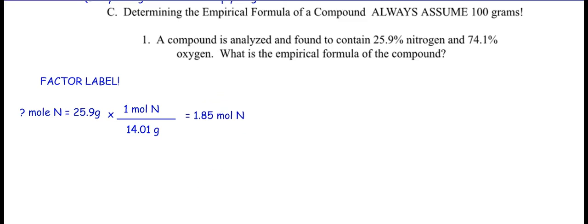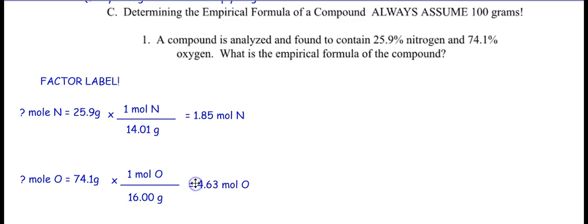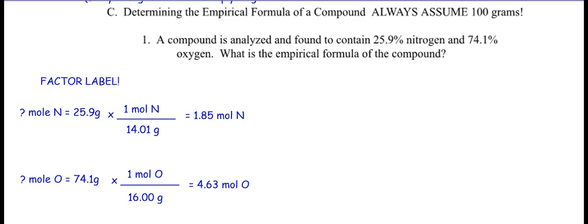Now do the same for oxygen: percent to grams gives 74.1 grams. Then grams to moles — divide by oxygen's molar mass, which is 16 grams per mole. That gives 4.63 moles of oxygen. So we've done percent to grams and grams to moles for both elements using factor labels. Now: divide by smallest. Your smaller number is 1.85, so divide both values by 1.85.